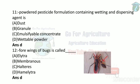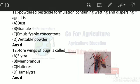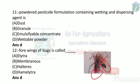Next: four wings of bugs are called hemilatera. You can see in the picture — the forewings and hindwings — so we call the four wings of bugs as hemilatera.